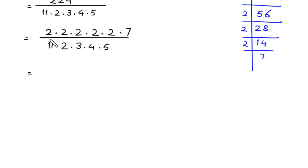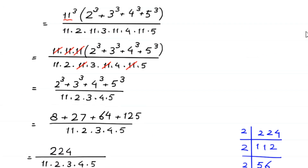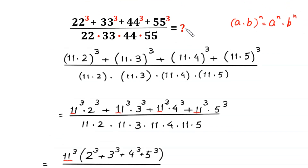Next, the 2 in the denominator cancels with one factor of 2 from the numerator, and 2 times 2 equals 4, giving 28 in the numerator, divided by 11 times 3 times 5, which equals 165. So this expression simplifies to 28 divided by 165, and this is the final answer.